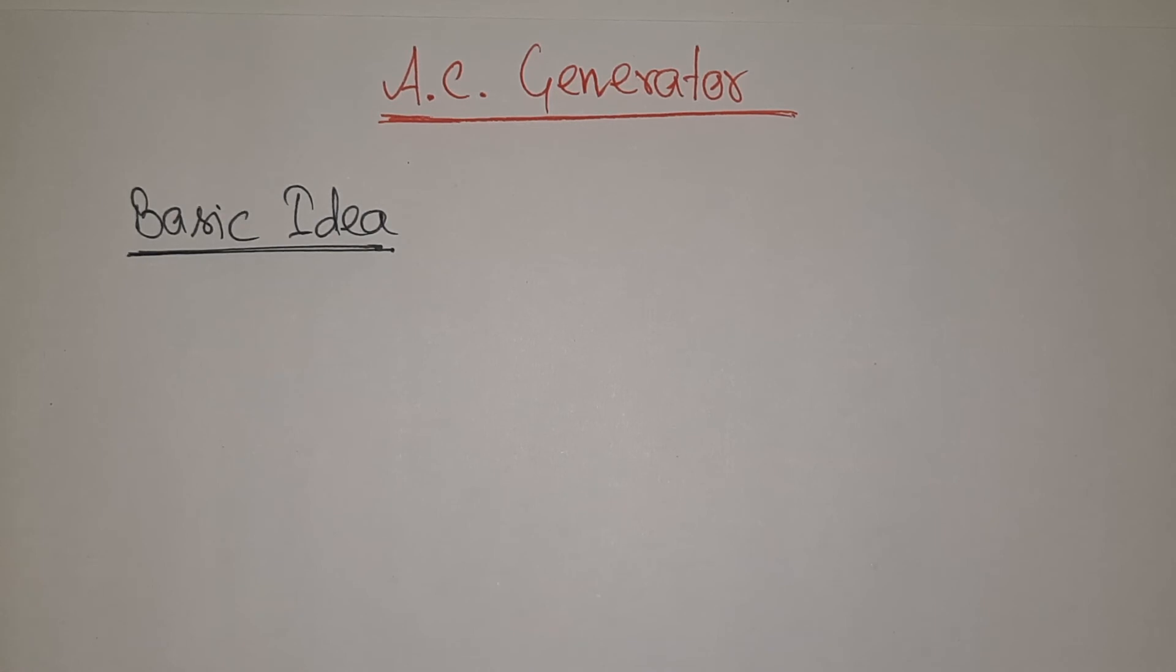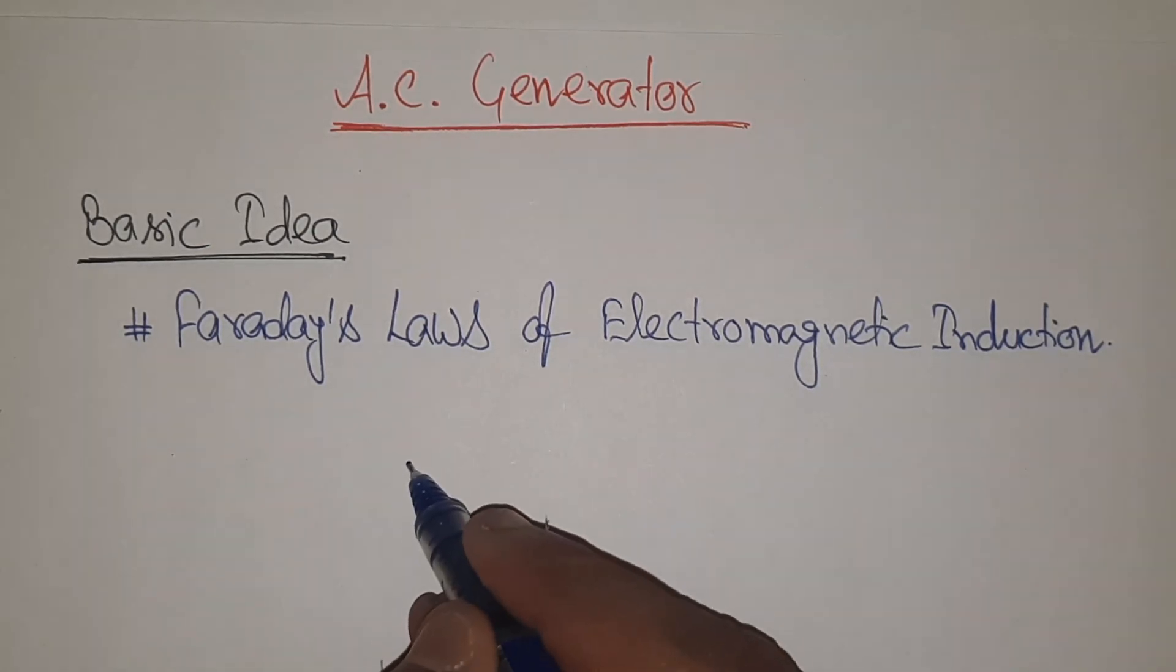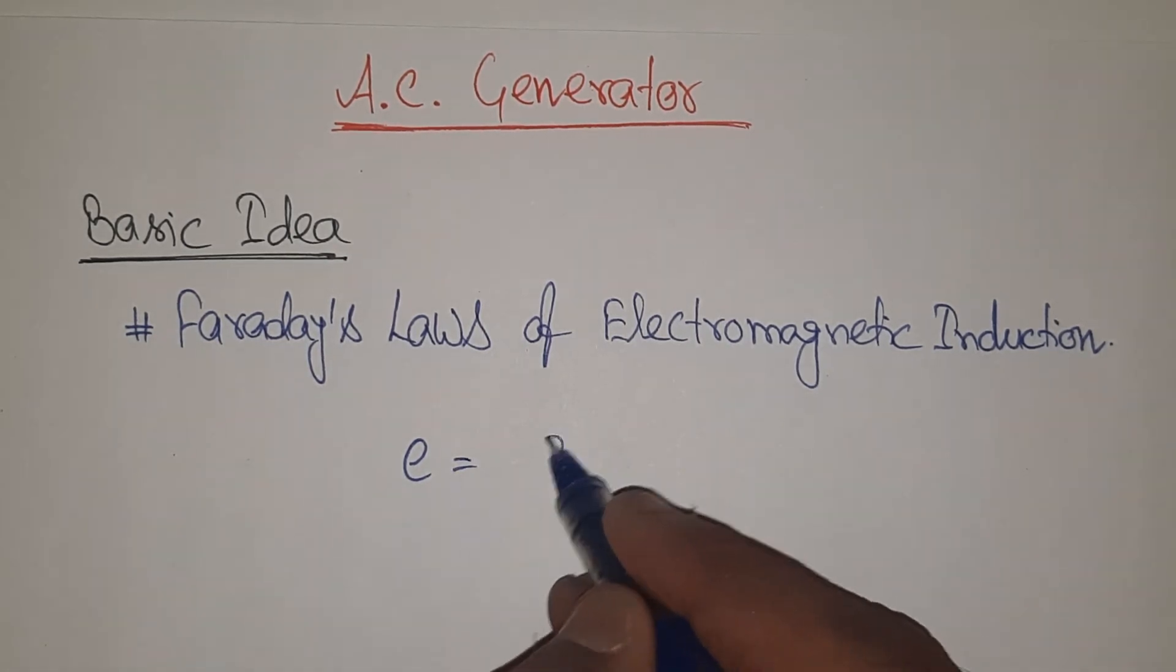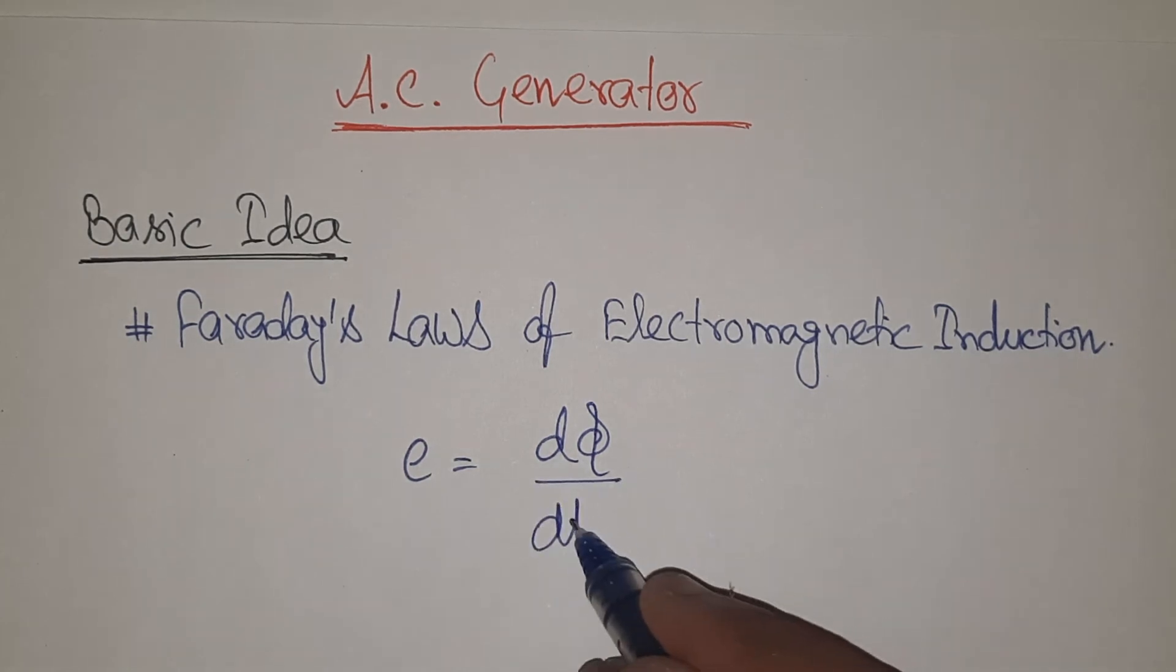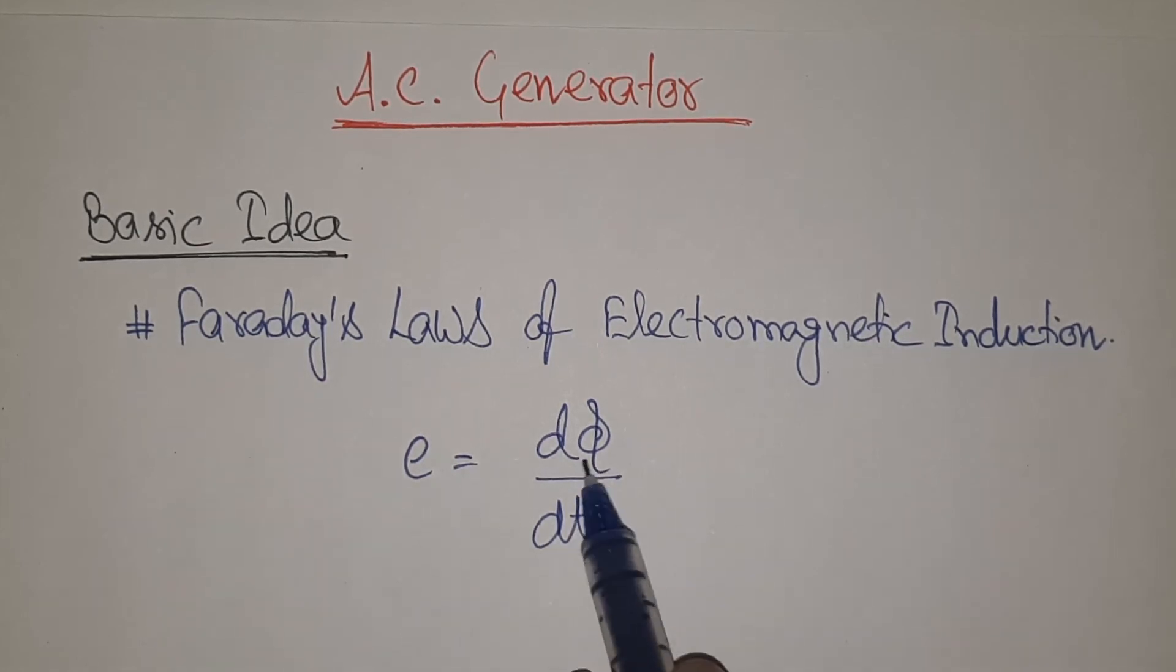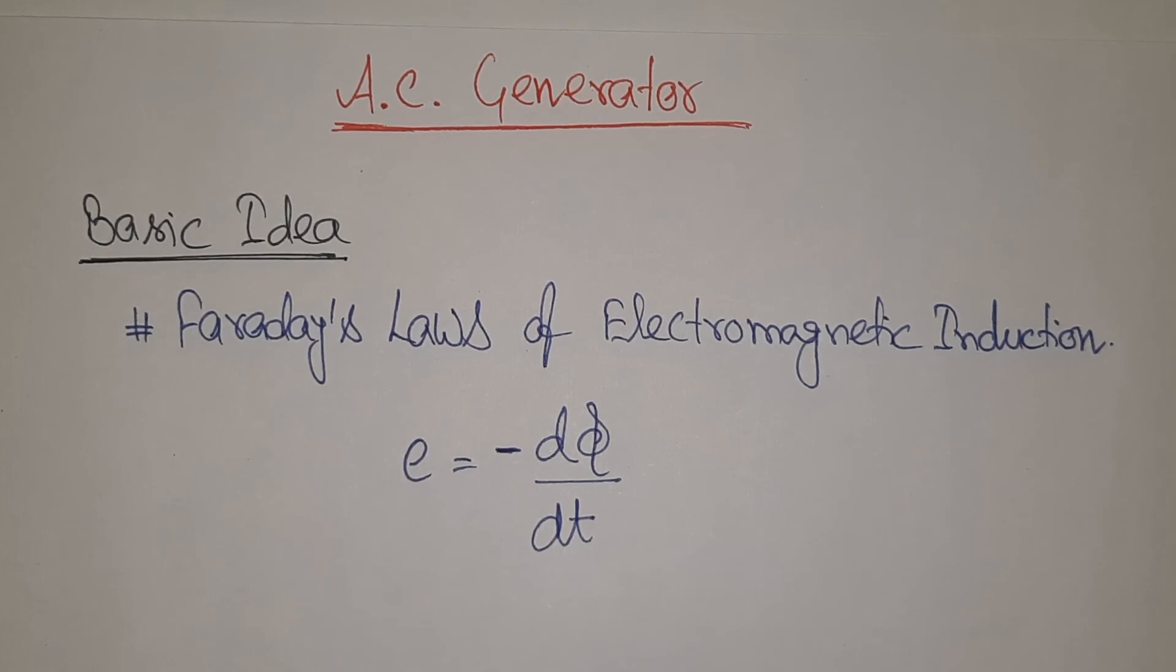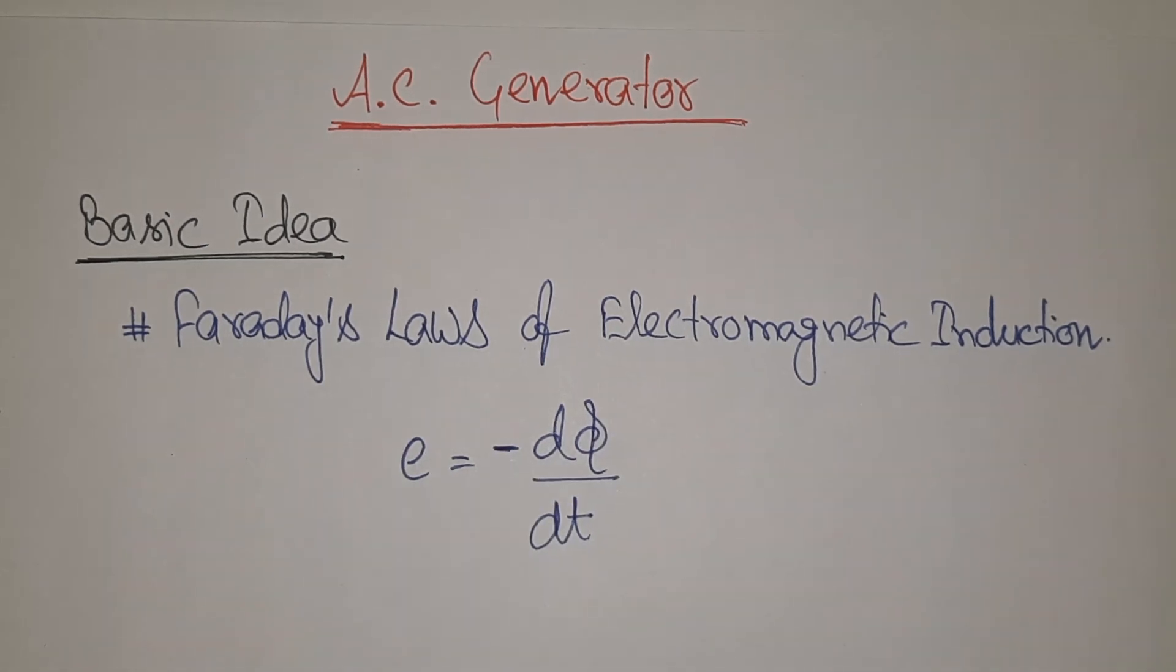If I talk in a very simple manner, then I will be saying AC generator is based on Faraday's laws. An AC generator is based on Faraday's laws, which state that induced EMF is equal to rate of change of flux associated with the circuit with respect to time, e = -dφ/dt. How do we apply this change in flux with respect to time to create the assembly?